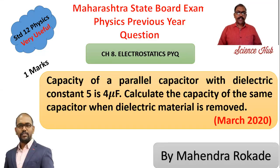So it's one more question from the chapter Electrostatics. Capacity of a parallel plate capacitor with dielectric constant 5 is 4 microfarad. Calculate the capacity of the same capacitor when dielectric material is removed. This question was asked in the March 2020 examination.